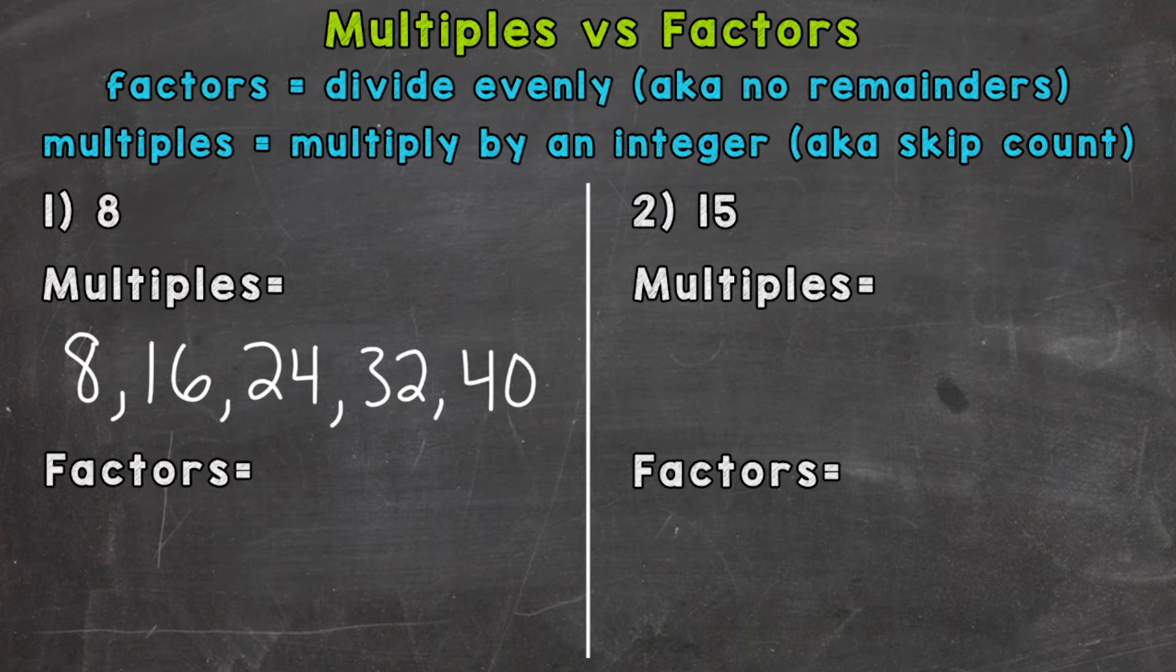I like to think of factors as all the numbers that can go into a given number. That's not the most mathematical or technical way of thinking about it, but it can help with determining the difference between multiples and factors. So let's find all the factors of eight.